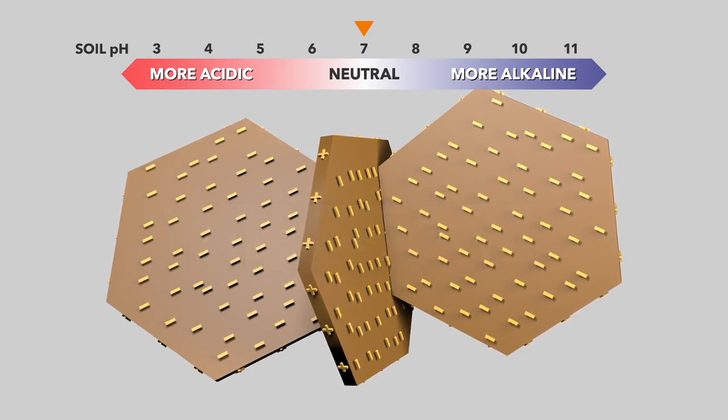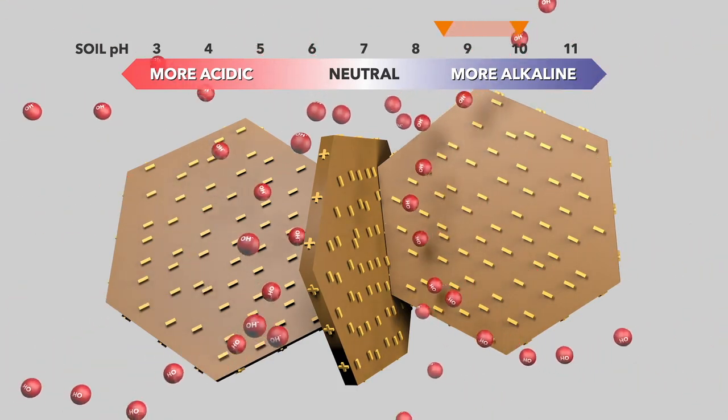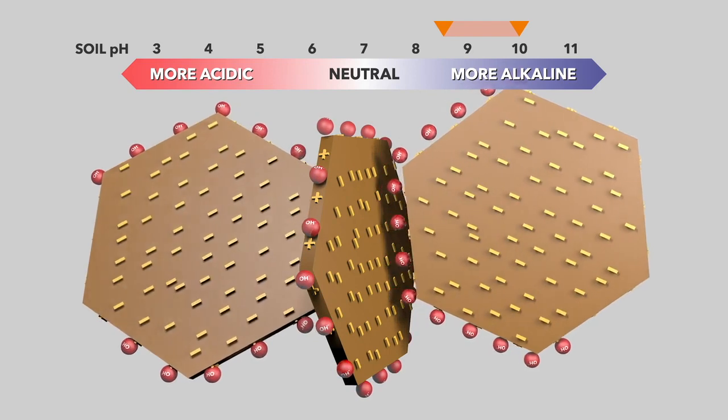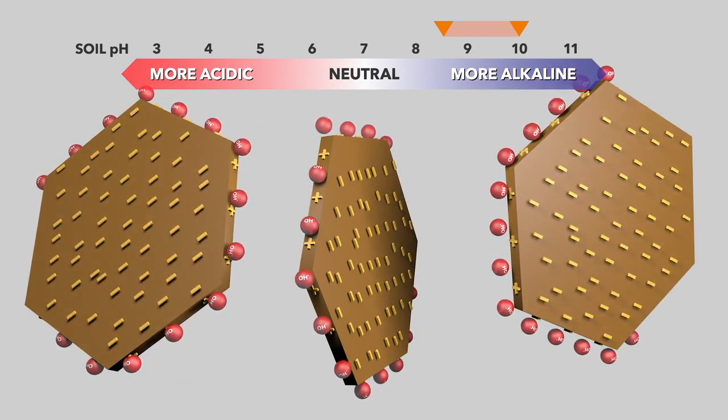If the pH increases towards 8.5 or 9, hydroxyl ions crowd around the positive charges on the edges of the clay, which breaks down the edge-to-face flocculation and the clay particles disperse.